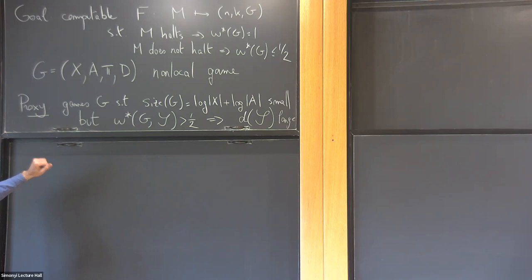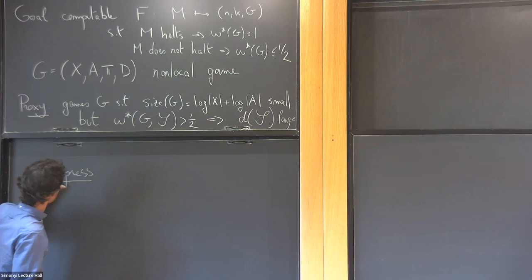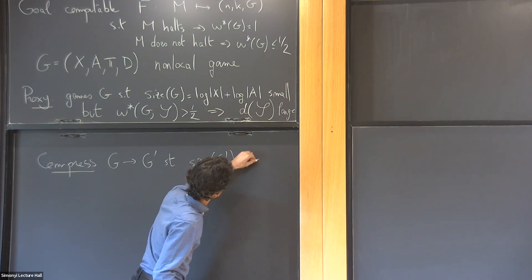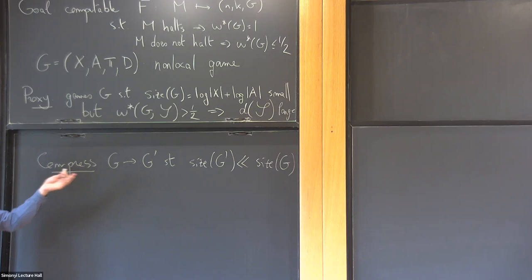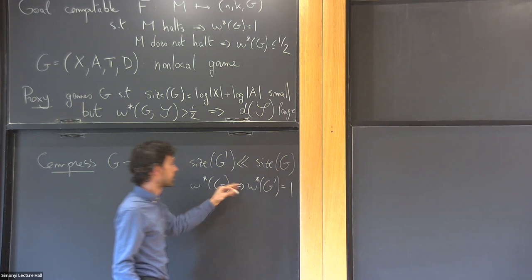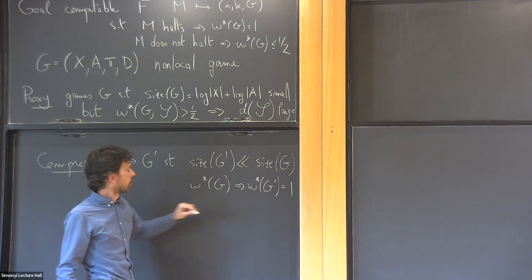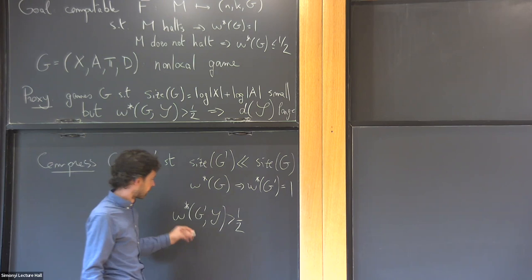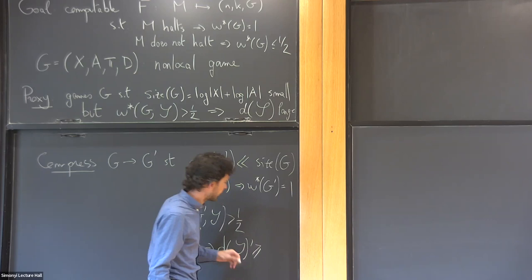The way we do that is by starting with large games and reducing their size while maintaining certain properties. The main building block is a procedure called 'compress' — a computable map from games G to games G-prime — that substantially reduces the size of the game (by a logarithm or poly-logarithm), and preserves important characteristics: if game G had a perfect winning strategy, so does G-prime. Furthermore, G-prime is hard to win: any strategy in G-prime succeeding with probability bigger than half must have dimension that's large as a function of the size of G — something like 2 to the size of G.